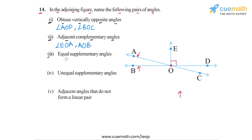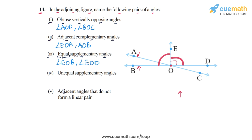In part three, we have to find equal supplementary angles. Two angles are supplementary if their sum equals 180 degrees. If two supplementary angles are also equal, then both must be 90 degrees. So the two equal supplementary angles in this figure are angle EOB and angle EOD — both are 90 degrees and their sum is 180 degrees.